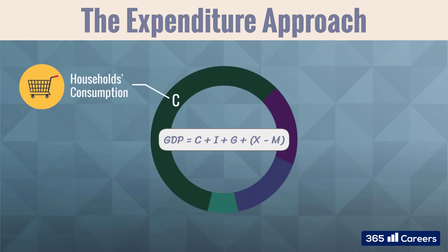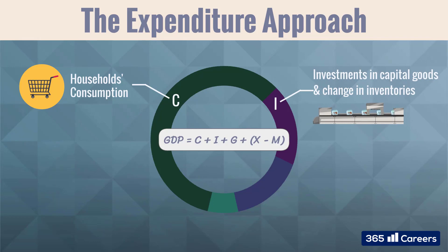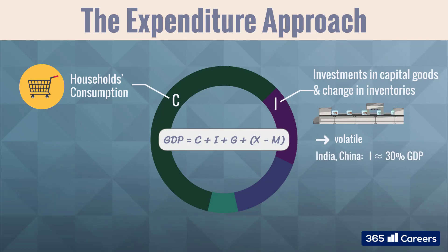Households' consumption on final goods and services is one of the major components of the total output of a country. Investment in capital goods and inventories is the second one. This is the most volatile component of the GDP measurement, as it is very sensitive to the ups and downs of business cycles. There cannot be economic growth without a substantial amount of investments. In India and China, investments account for more than 30% of GDP.